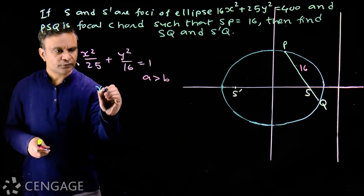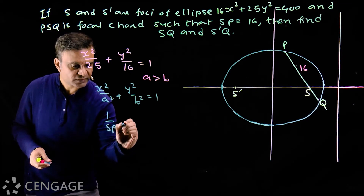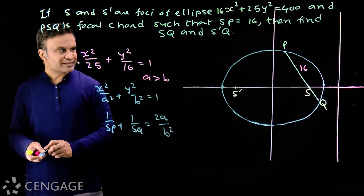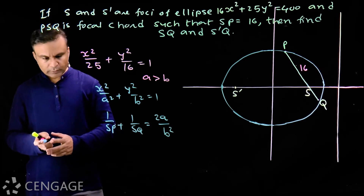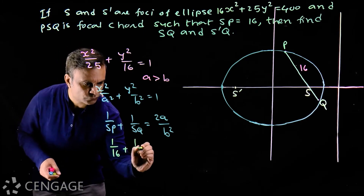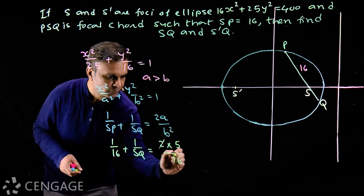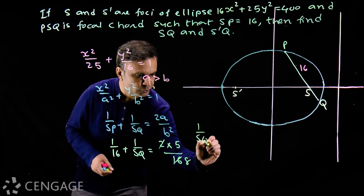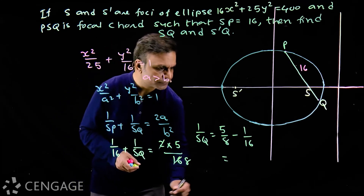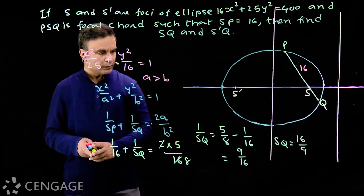For the standard equation x²/a² + y²/b² = 1, we use the formula 1/SP + 1/SQ = 2a/b². Substituting SP = 16, a = 5, b = 4: 1/16 + 1/SQ = 2×5/16 = 10/16 = 5/8. So 1/SQ = 5/8 minus 1/16 = 9/16, giving SQ = 16/9.